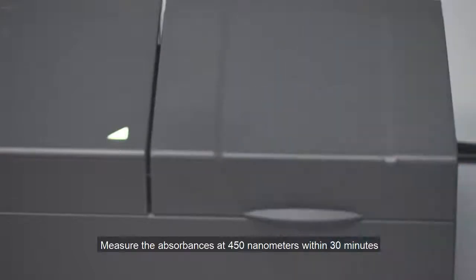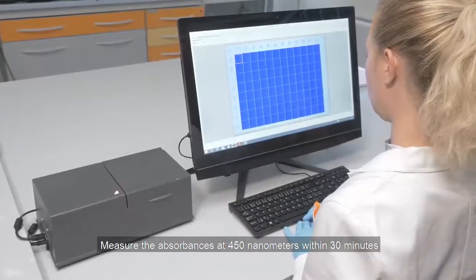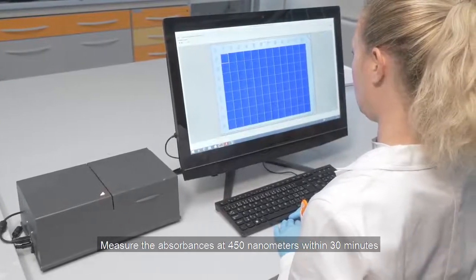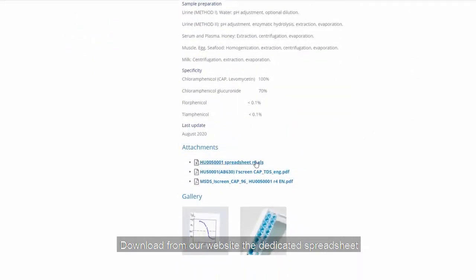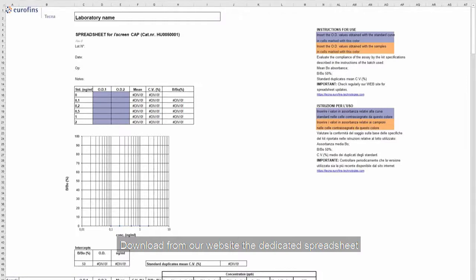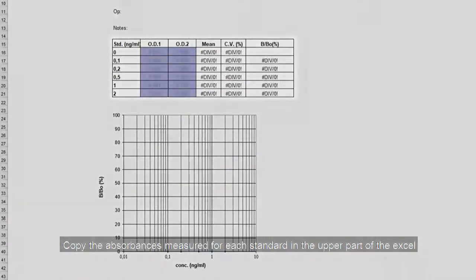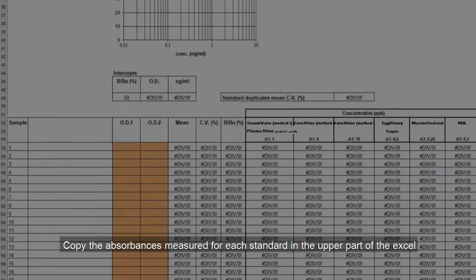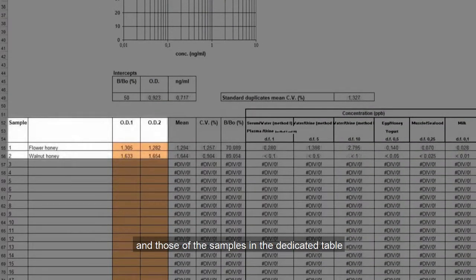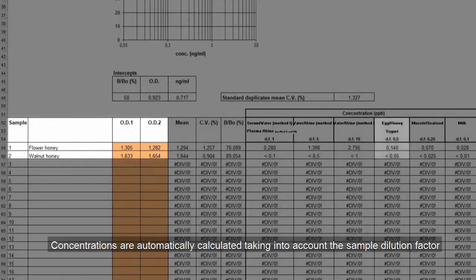Measure the absorbances at 450 nanometers within 30 minutes. Download from our website the dedicated spreadsheet. Copy the absorbances measured for each standard in the upper part of the Excel and those of the samples in the dedicated table. Concentrations are automatically calculated taking into account the sample dilution factor.